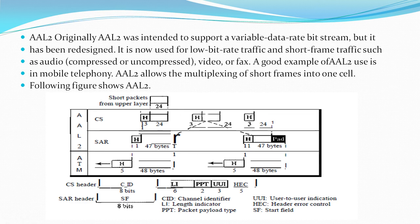AAL 2. The figure shows the AAL 2. Originally AAL 2 was intended to support a variable data rate bit stream, but it has been redesigned. It is now used for low bit rate traffic and short frame traffic such as audio, video, or fax. A figure shows the process of encapsulating a short frame from a single source — such as one user of a mobile phone — or from several sources, such as several users of mobile telephones, into one cell.